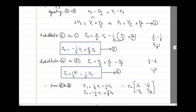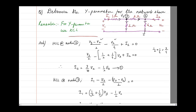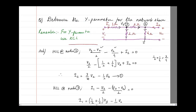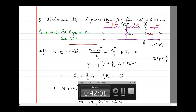Based on the problem we solved, the Y parameter matrix was [1/2, −1/4; −1/4, 5/8]. Here Y12 = Y21 = −1/4, so the circuit is reciprocal. But Y11 = 1/2 ≠ 5/8 = Y22, so the circuit is not symmetrical. Hence the circuit is reciprocal but not symmetrical. Thank you.